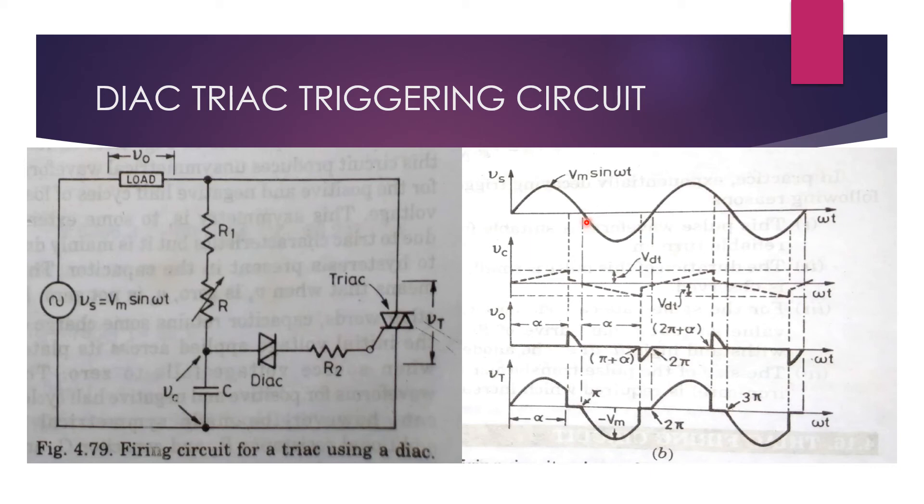At omega t equal to pi, source voltage is 0 and tries to become negative. Immediately, the TRIAC will turn off and entire source voltage appears across the TRIAC. Load voltage will be 0.